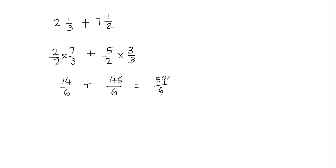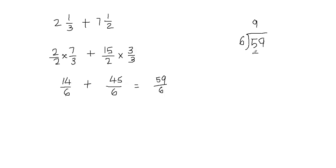Since we got an improper fraction — the numerator is greater than the denominator — I need to convert this into a mixed fraction using long division. I'll divide 59 by 6. 6 goes into 59 nine times. 6 times 9 is 54, so I write 54 and subtract: 59 minus 54 gives a remainder of 5.